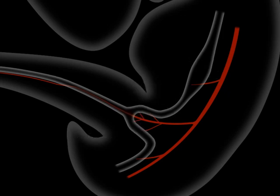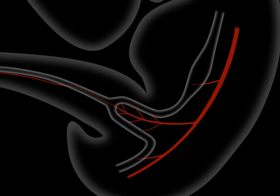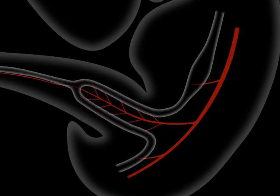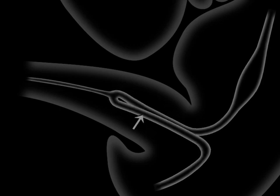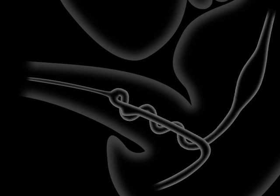As the midgut develops, it protrudes into the body stalk, forming a loop, with the superior mesenteric artery forming the axis of the loop. As it protrudes, the midgut loop makes a quarter turn counterclockwise, so its distal part is to the left and its proximal part is to the right. The distal part of the loop develops a bulge that will become the cecum, and the proximal part of the loop becomes quite convoluted.